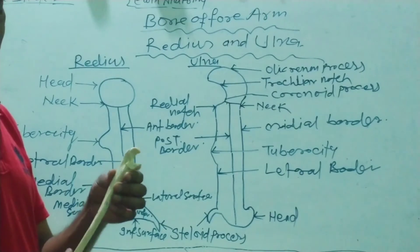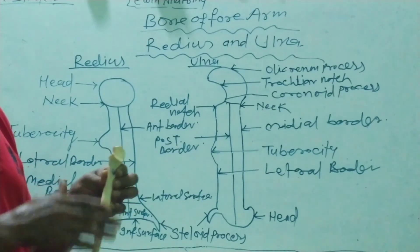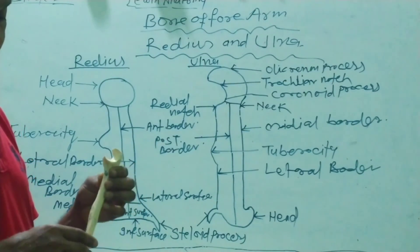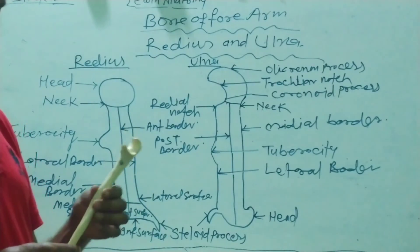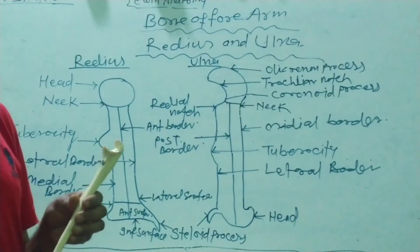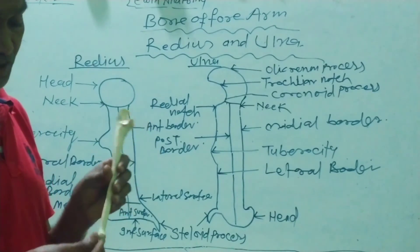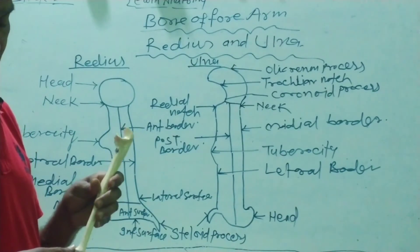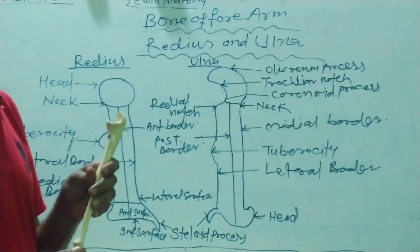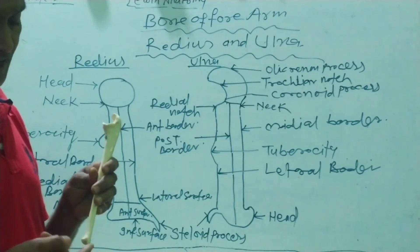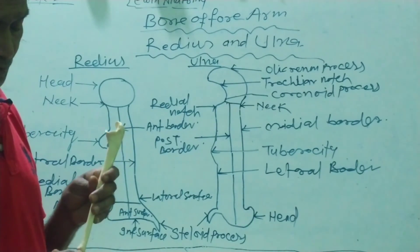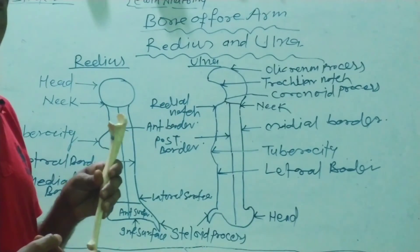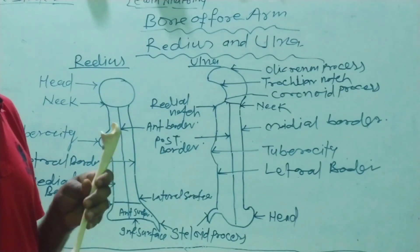The surfaces of the ulna shaft present: number one, anterior surface; lateral surface; and posterior surface. The lower end of the ulna forms a rounded projection known as the head of the ulna. Laterally, it also forms a conical projection directed downward and inferiorly, known as the styloid process.